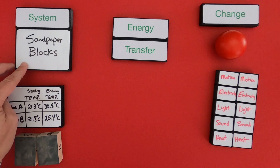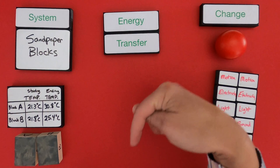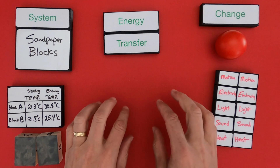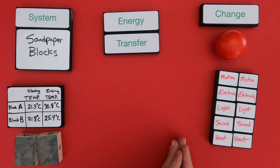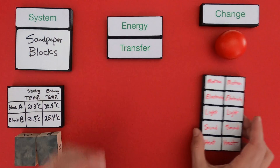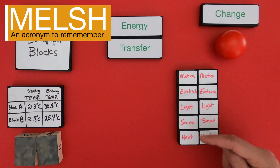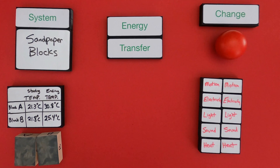The system is going to be the sandpaper blocks. What I'd love to have you do is use the thinking slides below or a piece of paper. Show me what's changing in the system, what the energy is before and after in that system, and then show me where energy is transferred. Remember the different types of energy listed: motion, electricity, light, sound, and heat — you could use those. Pause the video, show me your thinking, and then come back and we'll see how our thinking compares.